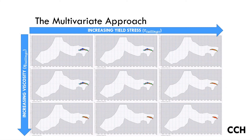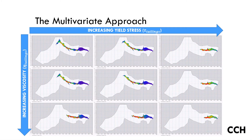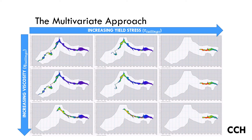This graphic shows the impact of differing values of yield stress and viscosity for an example failure. Clearly this makes a significant impact to the inundated area, and hence a wide array of parameters should be included when undertaking inundation models.